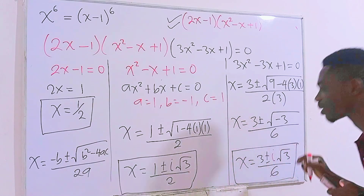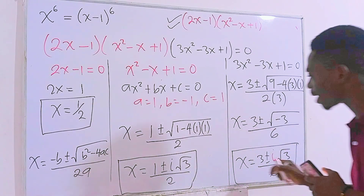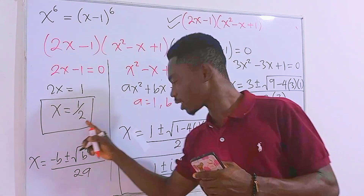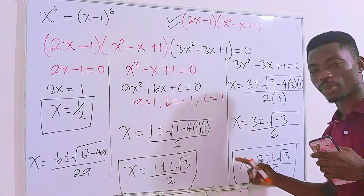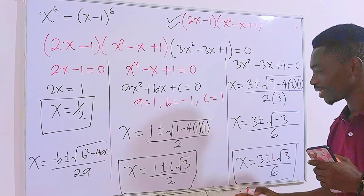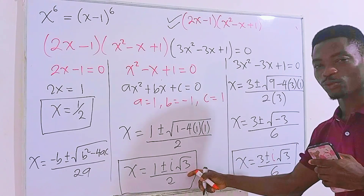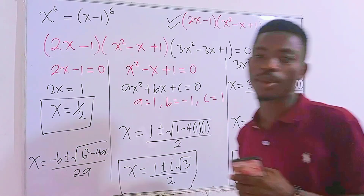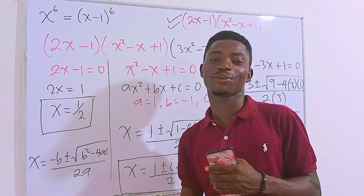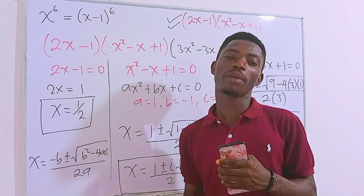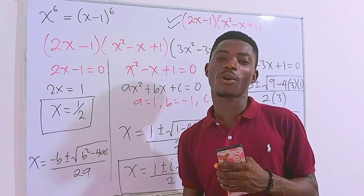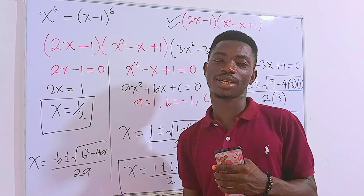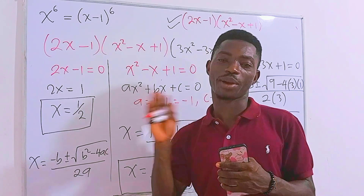And we are done for this as well. Looking at all the answers, we have only one real solution and four complex solutions — two from the second factor and two from the third. I hope you found the video useful. Don't forget to give a thumbs up, subscribe to my channel for more, and see you in the next video. Have a nice day, take care, bye-bye.